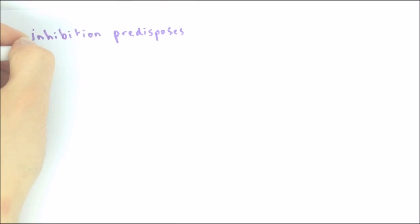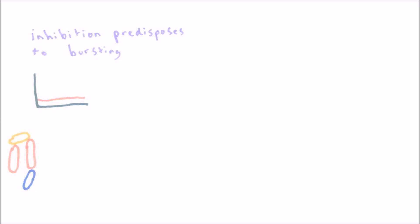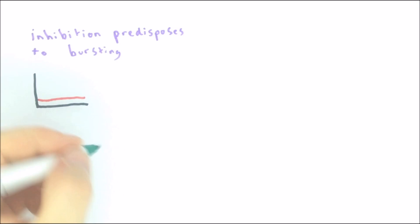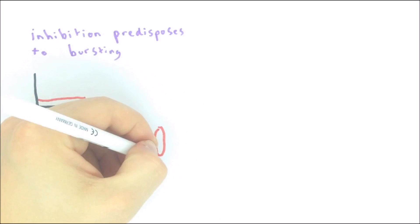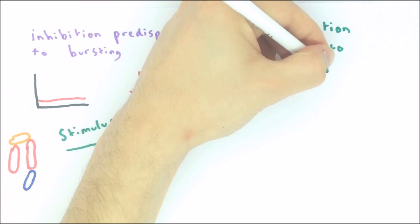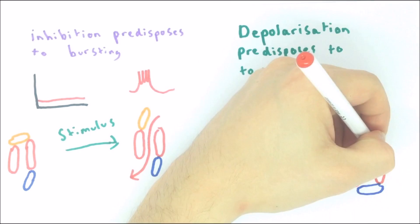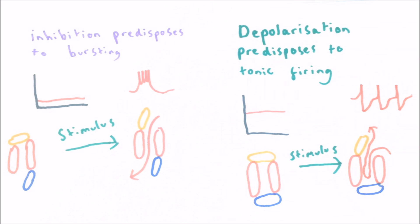So whether a relay neuron will fire in burst or tonic mode depends upon what it has been doing for the previous 100 milliseconds. If it has been inhibited, the inactivation gate will be open, so when the neuron is next depolarized, current will continuously flow through the channel, triggering bursting. In contrast, if the neuron has been depolarized, the inactivation gate will be closed and the neuron will fire normally in tonic mode.